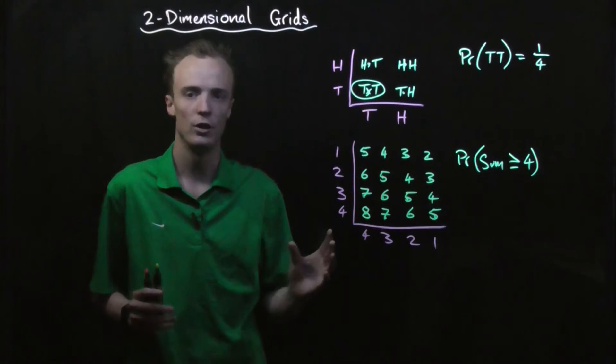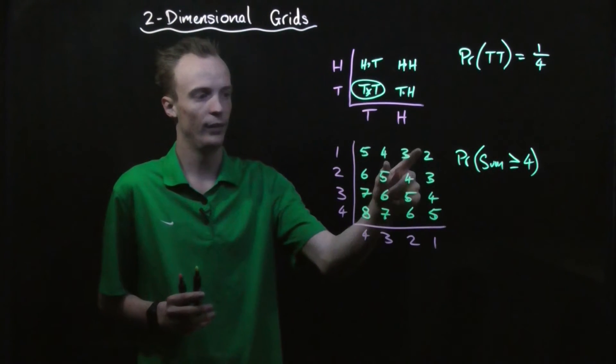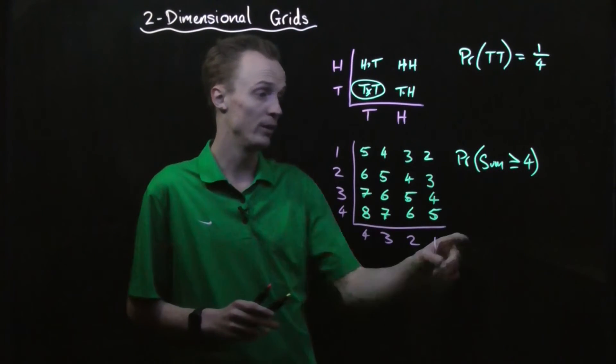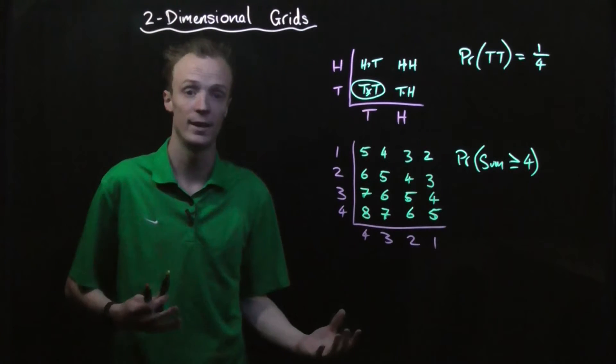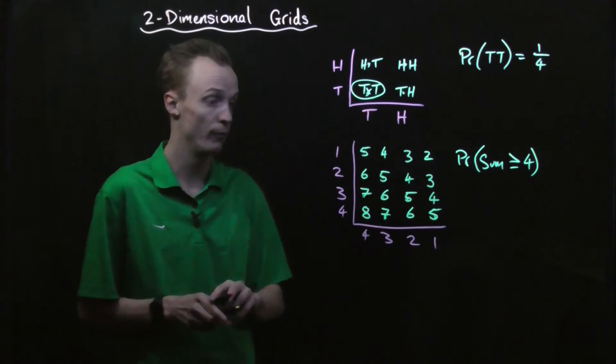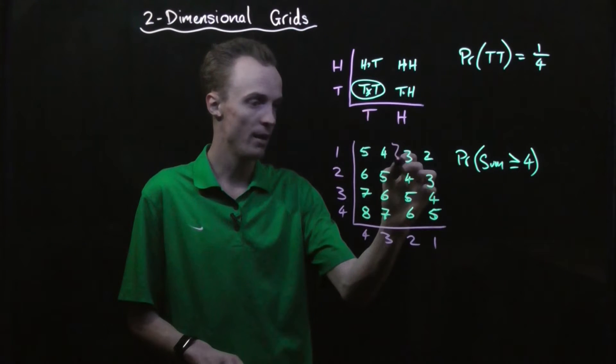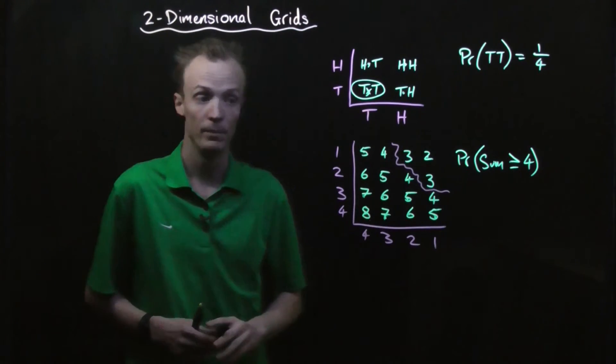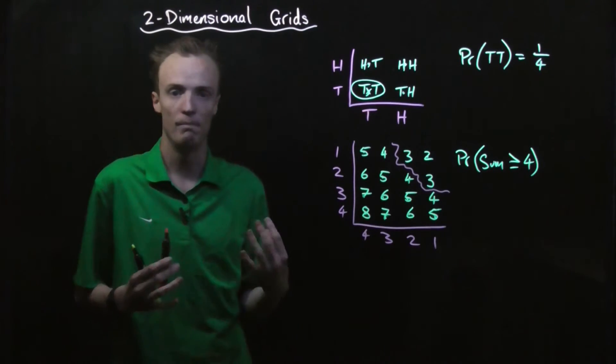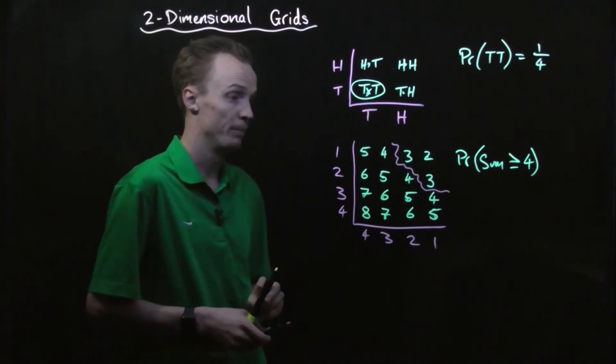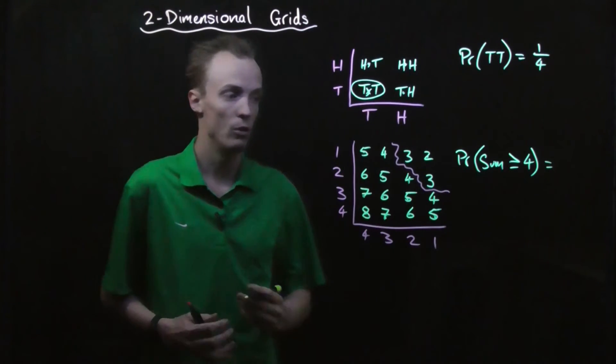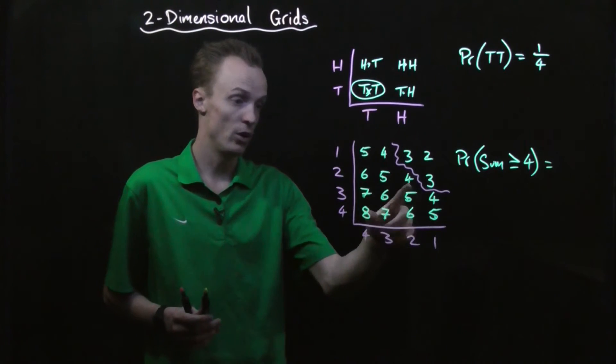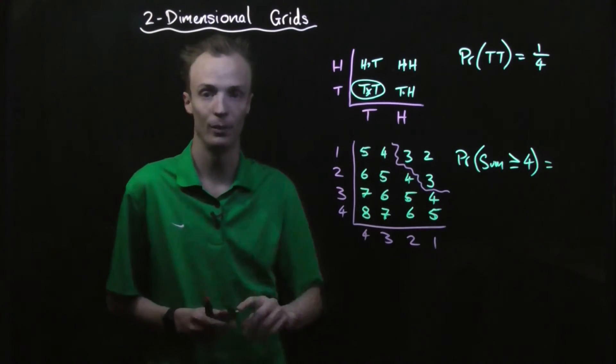So now, in our two-dimensional grid, we've got the sum of each possible outcome that exists. So what I can now do is I can look at what my success criteria is equal to or greater than four. So that's going to be every possible outcome that's this side of the line. So it's only three that don't meet our successful criteria. So the probability of getting something equal to or greater than four is going to be 13 outcomes of a possible 16.